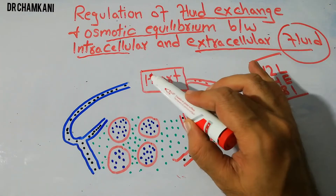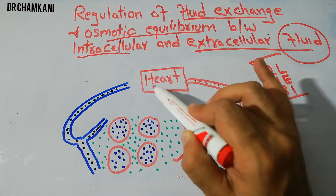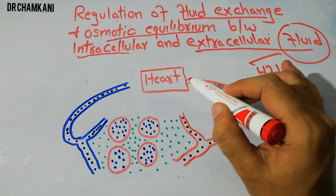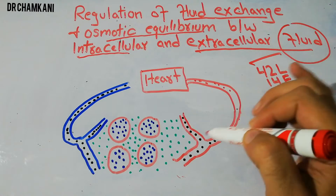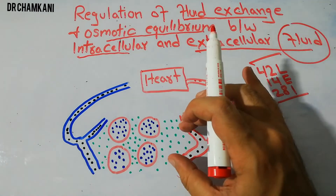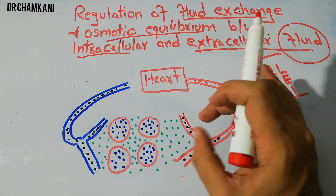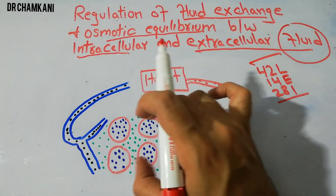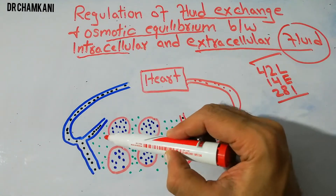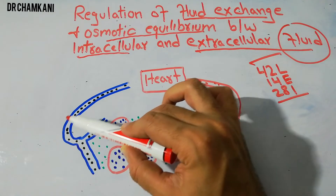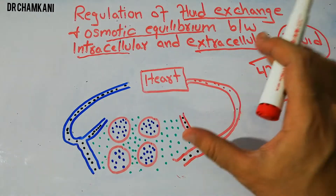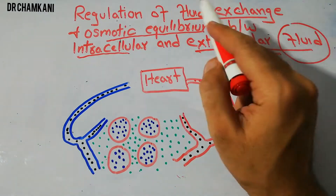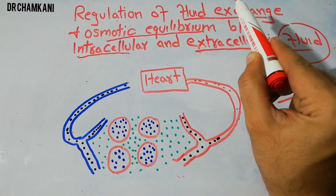The heart is basically pumping the blood. Blood has red blood cells as well as plasma. That blood is carried with the help of arteries, arterioles, and capillaries to the tissue, where the nutrients and fluids are provided to the different cells. The cells consume the different nutrients and then the deoxygenated blood returns to the heart.